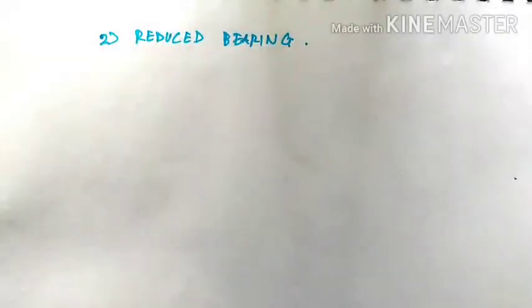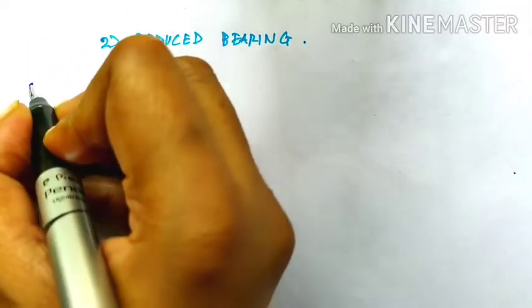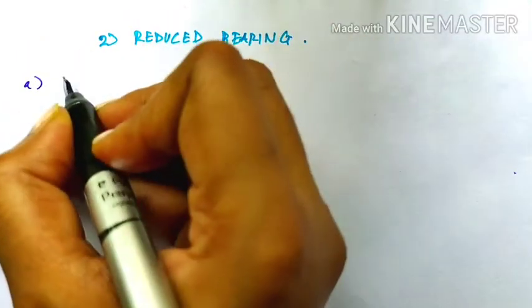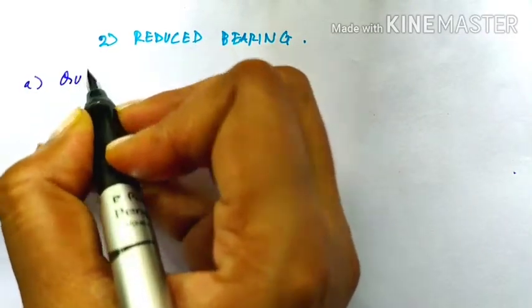Now, the next kind of bearing is reduced bearing. Let us come to the characteristic first. The system used by reduced bearing is that of a quadrant system.